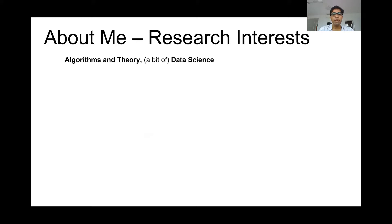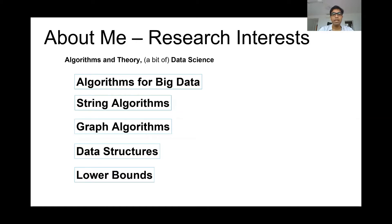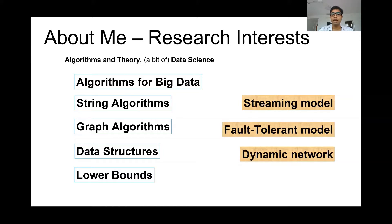My research interest is mostly in algorithms and theory — more specifically, algorithms for big data, string algorithms like algorithms related to edit distance, hamming distance, and all string similarity measure algorithms, then graph algorithms, data structures, proving lower bounds for data structures, and hardness of approximation. I am also interested in designing algorithms in the streaming model, the fault tolerant graph model — which is the topic of today's talk — and also in dynamic networks.